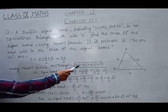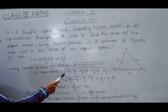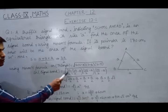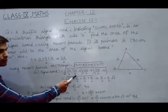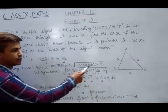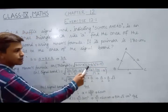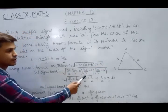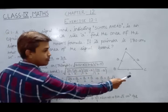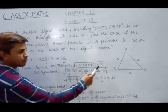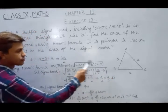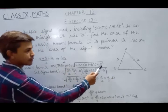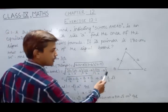So according to this formula, area of signal board, we have under root s which is 3a upon 2, times s minus a. It is 3a upon 2 minus this side which measures a itself. Next is s minus a, and next is s minus c. So this is 3a upon 2 minus the third side c which measures a as well.